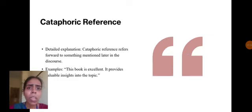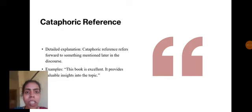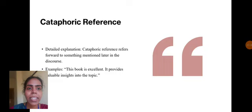Next is cataphoric reference, which refers forward to something mentioned later in discourse. For example, this book is excellent - it provides valuable insights into the topic. So it is mentioning the further thing about that book.